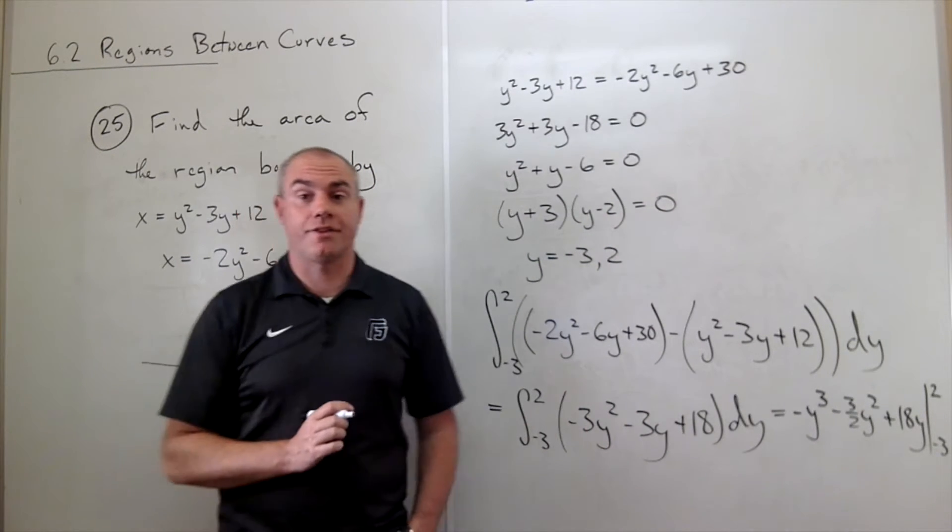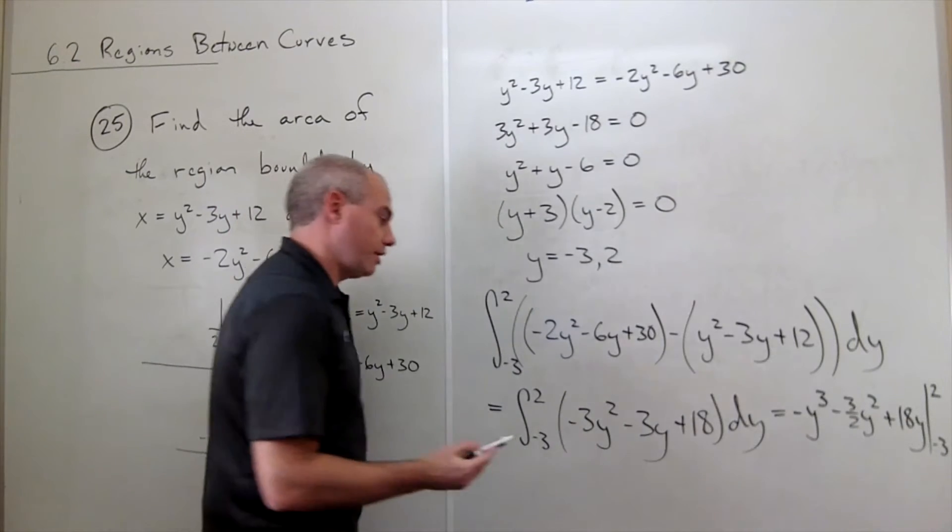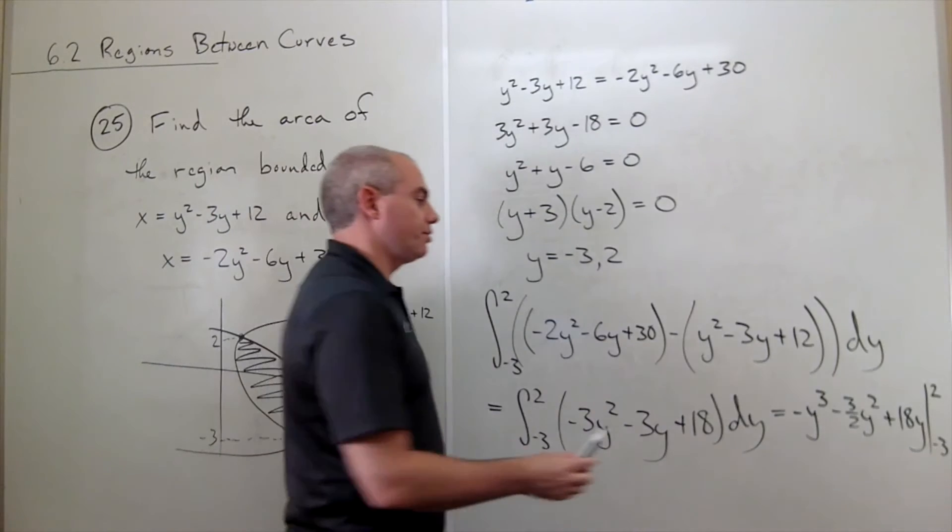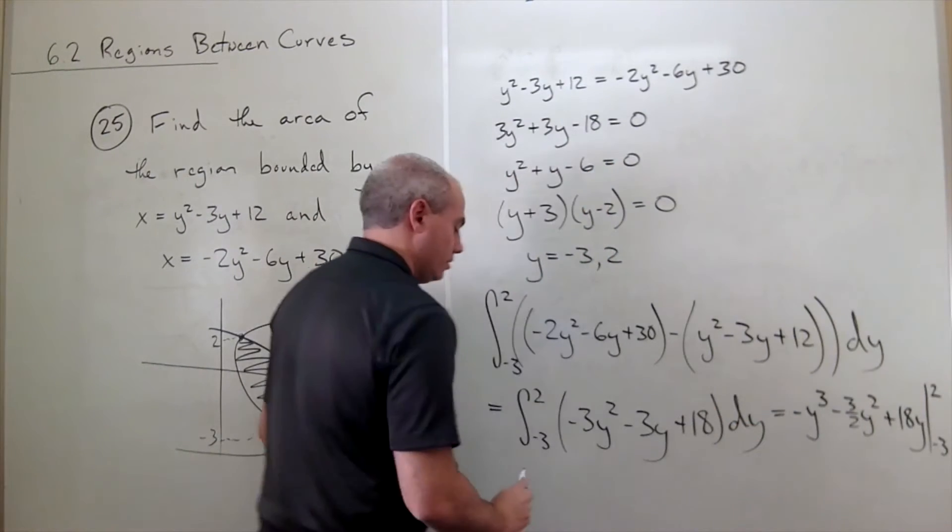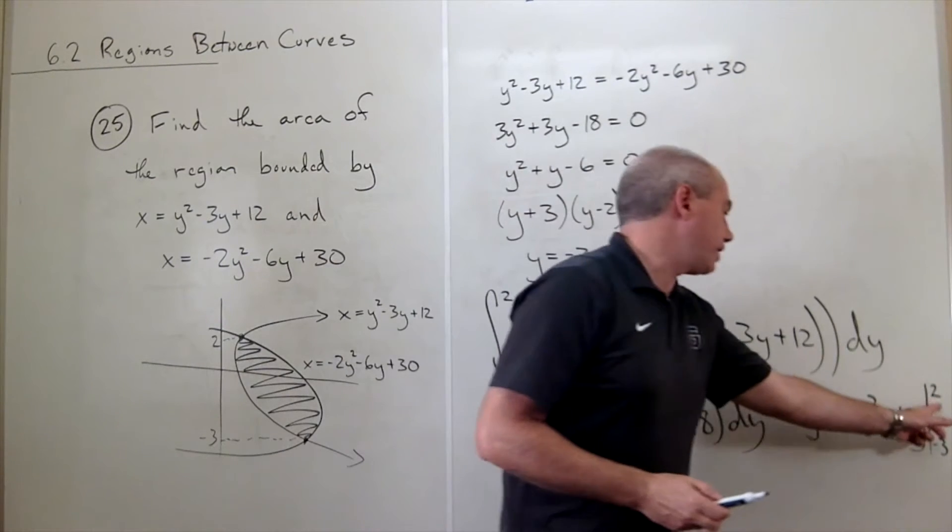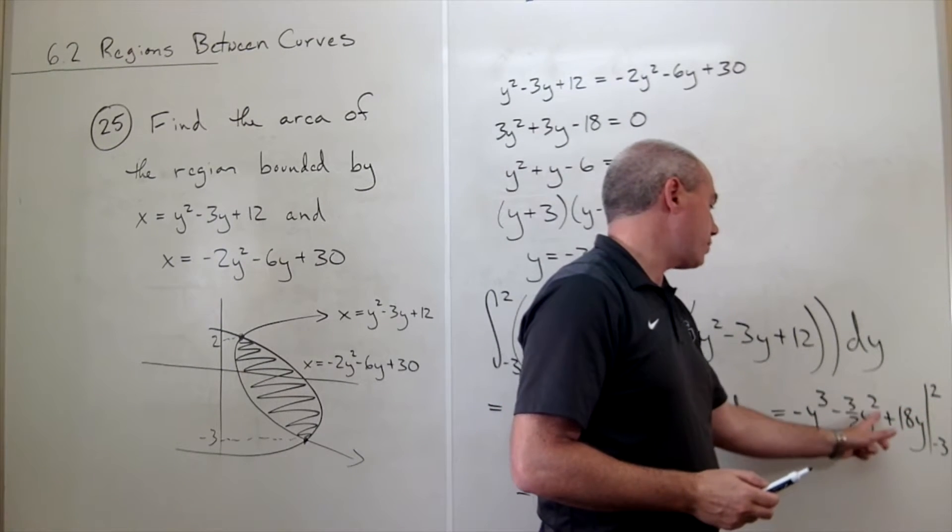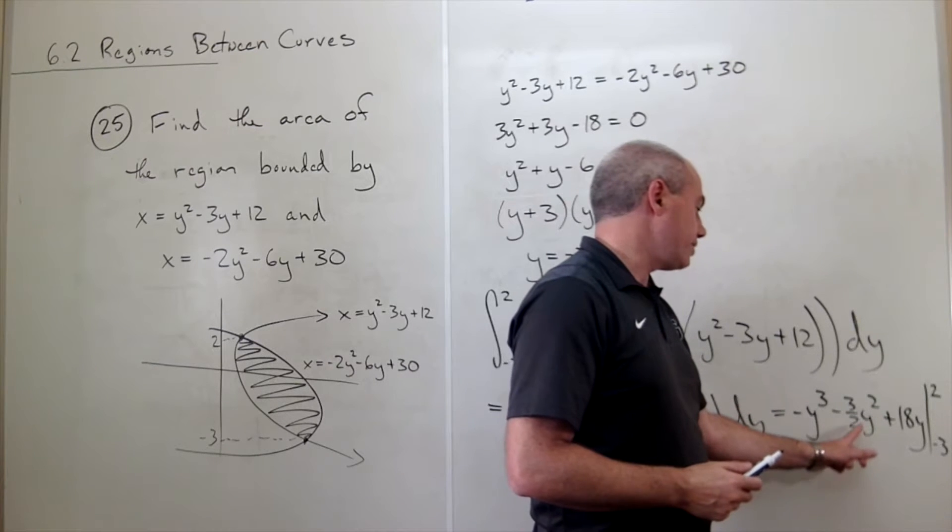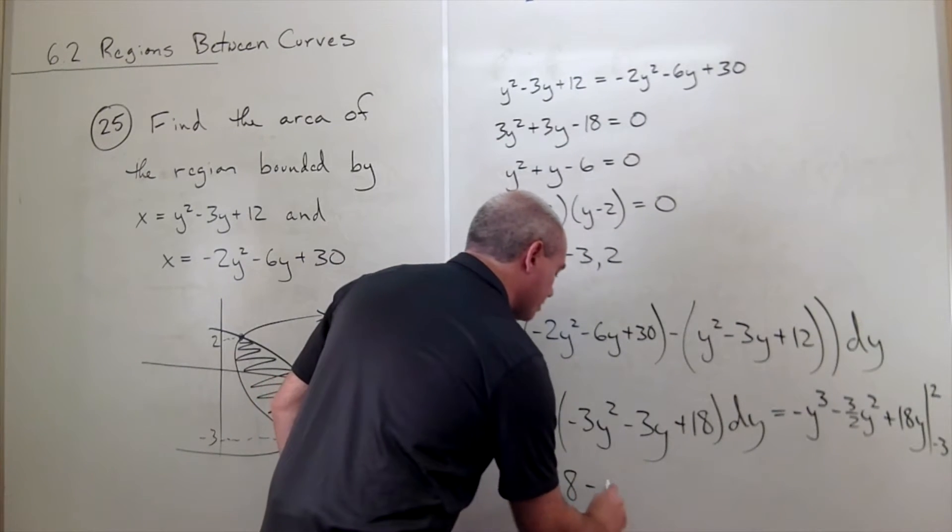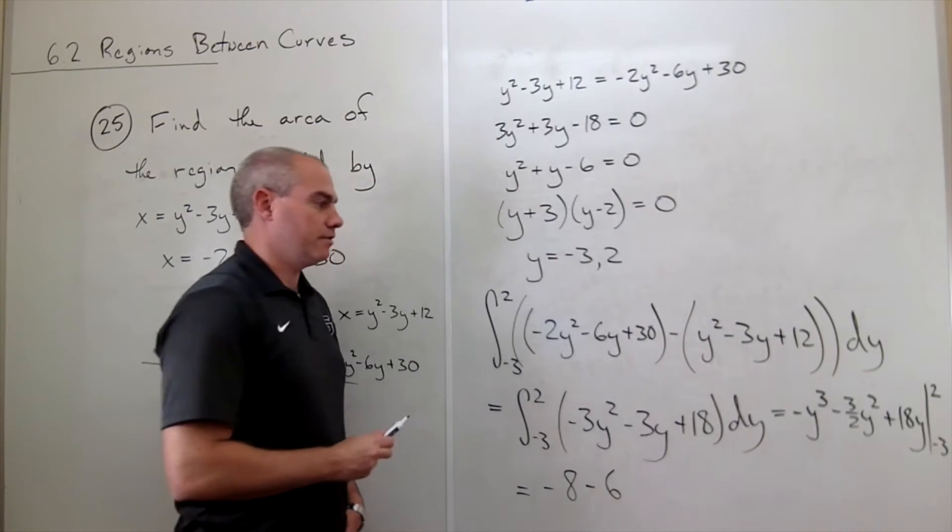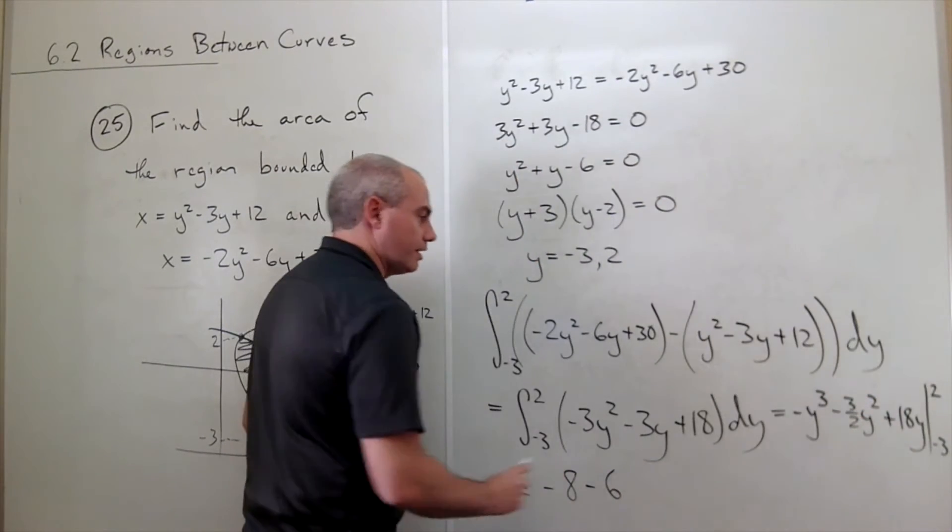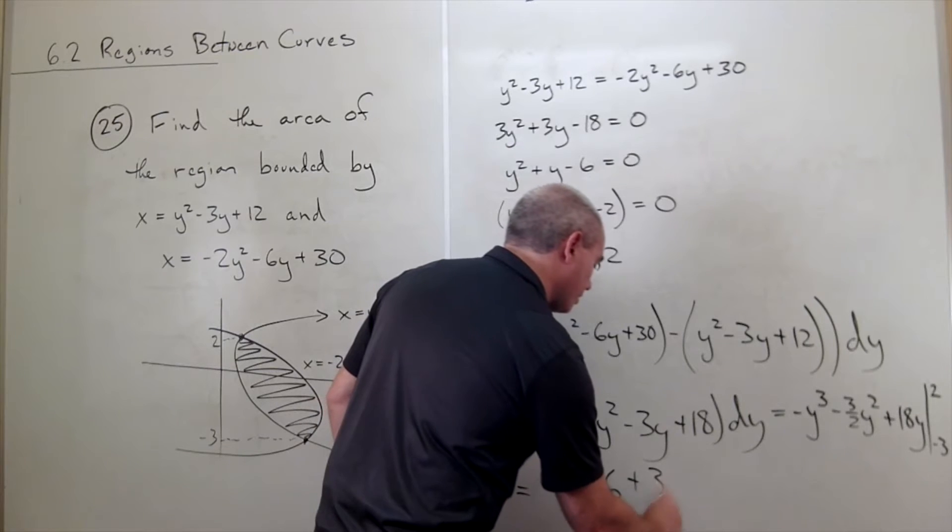Let's plug things in at this point. If we plug in 2, we get 2 cubed, or minus 8. If we plug in 2 here, we get 2 squared, which is 4, divided by 2 is 2, 2 times minus 3 is minus 6. And finally we plug in 2, 2 times 18 is plus 36.